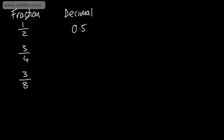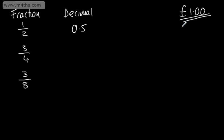A nice easy way to think about this is to use money. I always take a pound and consider what would happen if I had a pound. So if I had half of a pound, I'd have 50p, and we could write that as 0.50. Of course, we don't need the zero on here, so we could simply write it as 0.5.